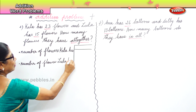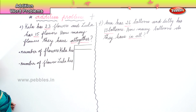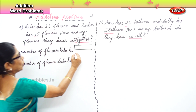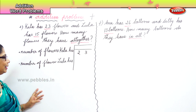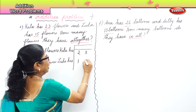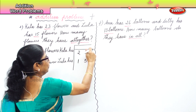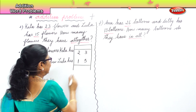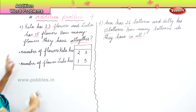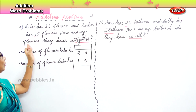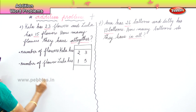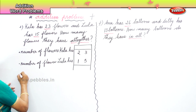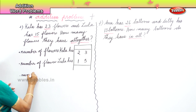Number of flowers Kala has: 23 — two and three, twenty-three. And Leela: one and five, fifteen. Now what is the last statement? How many flowers do they have altogether? You write: total number of flowers altogether, or number of flowers altogether.